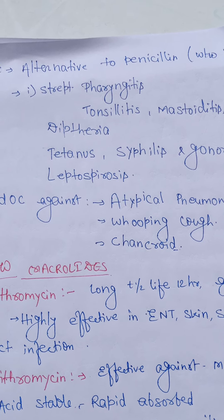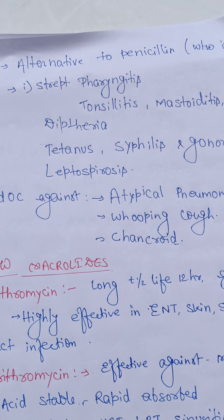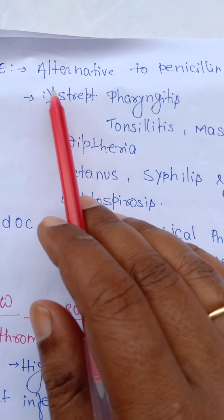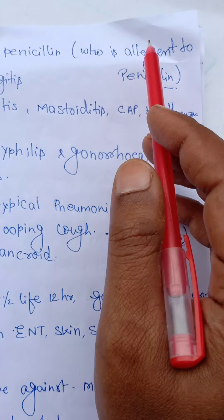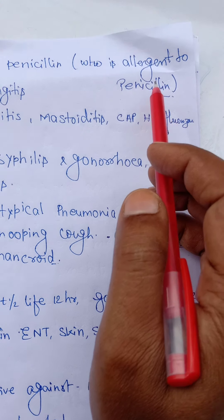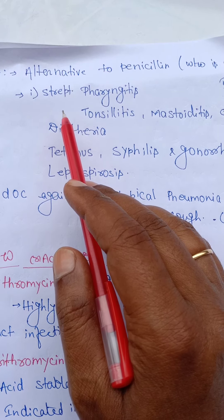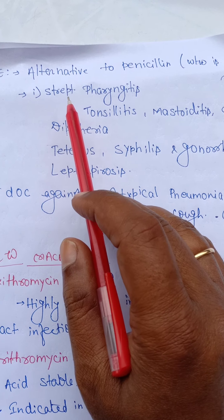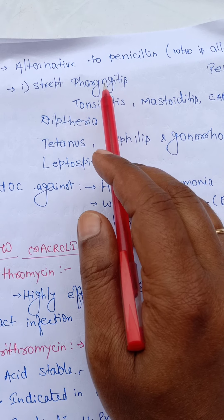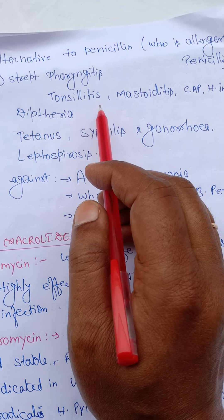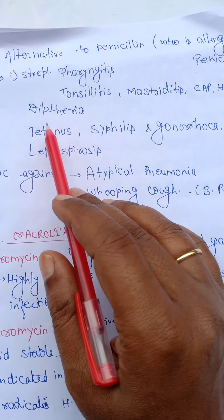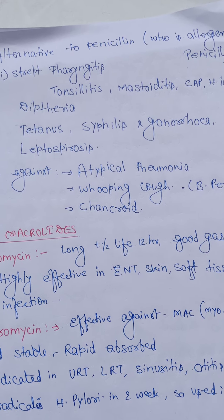Erythromycin is used as an alternative to penicillin for patients who are allergic to penicillin. Its uses include streptococcal pharyngitis, tonsillitis, mastoiditis, community-acquired pneumonia, H. influenzae, and diphtheria — against which erythromycin is very much active.